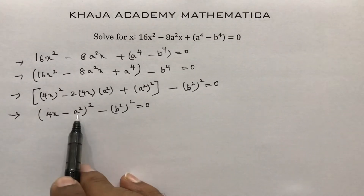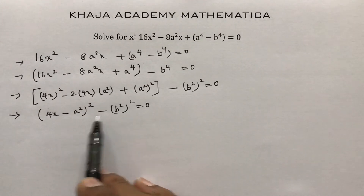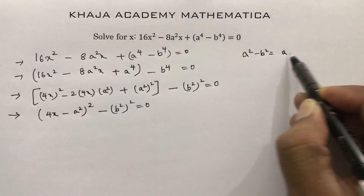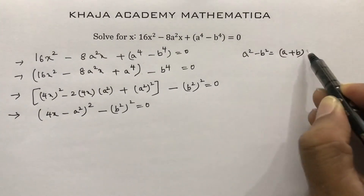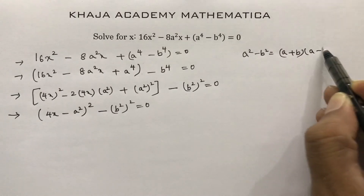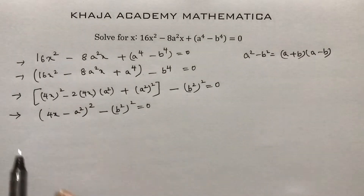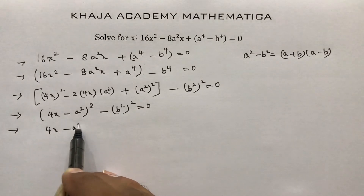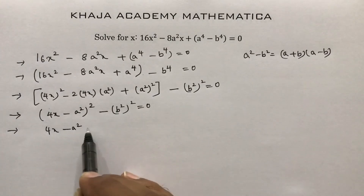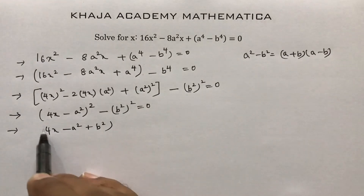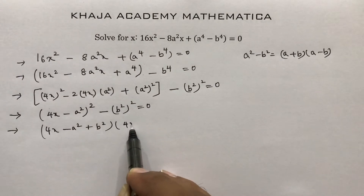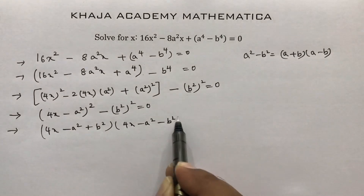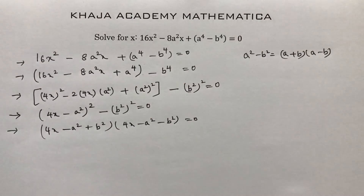This is clearly in the form a² - b², and a² - b² = (a + b)(a - b). So: (4x - a² + b)(4x - a² - b) = 0.